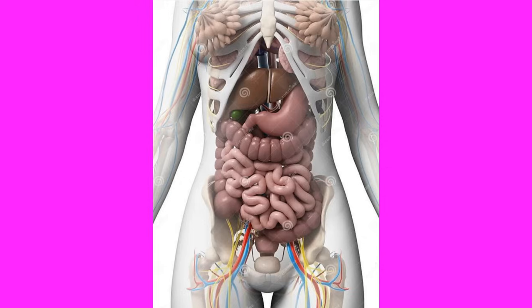Regional anatomy studies different regions or areas of the body, such as the head, the chest, or the abdomen. It is important for understanding specific structures in one area of the body. It usually employs X-ray radiography and other imaging tools and techniques to help visualize certain areas of the body.